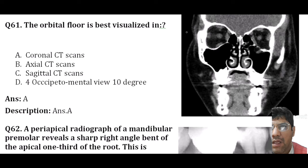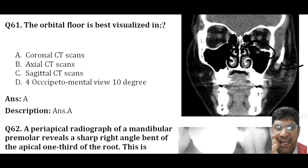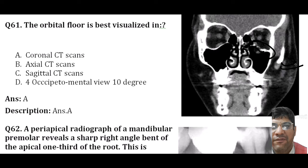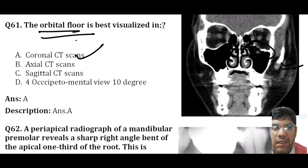The orbital floor is best visualized in a coronal CT scan. Coronal scans are taken from a front-to-back perspective, providing a view of the orbital floor and its structures in the context of orbital imaging. Axial scans are taken from a top-to-bottom perspective, and sagittal CT scans are taken from a side-to-side perspective.